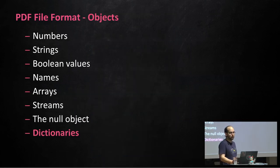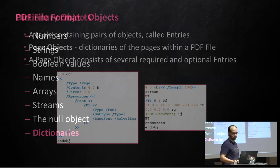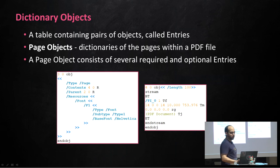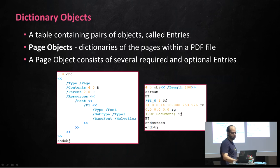Now, I've mentioned objects, so let's go over this quickly. There are eight types of possible objects within a PDF file — anything from numbers and strings to arrays, streams, and even a null object. But the one that interests us most for this attack is the dictionary object. A dictionary is an object representing a table which contains pairs of other objects — keys and values — called entries. A page object is a dictionary representing a specific page within a PDF; it consists of several required and optional entries, as we can see in this example page object.